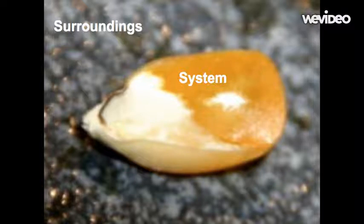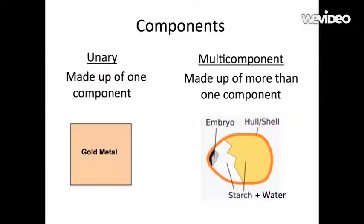We classify our systems in thermodynamics according to five different categories. The first category is components. By this, we are asking you to think, what is the system made of? Going back to our diagram of the popcorn kernel, we can see that it is made up of starch, water, and a hard exterior shell. This makes it a multi-component system.